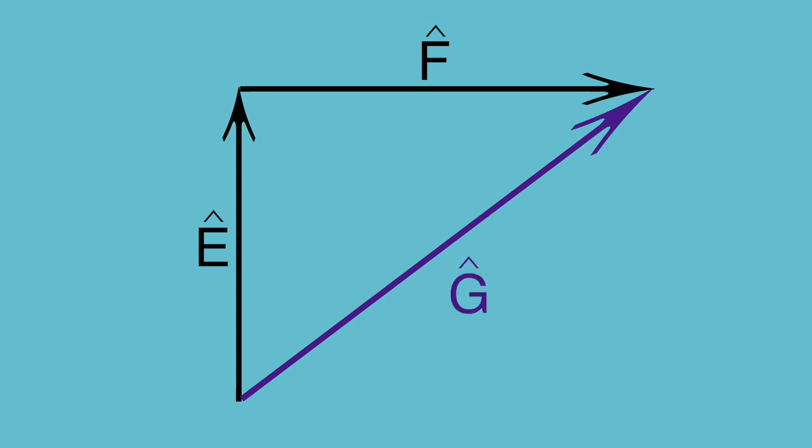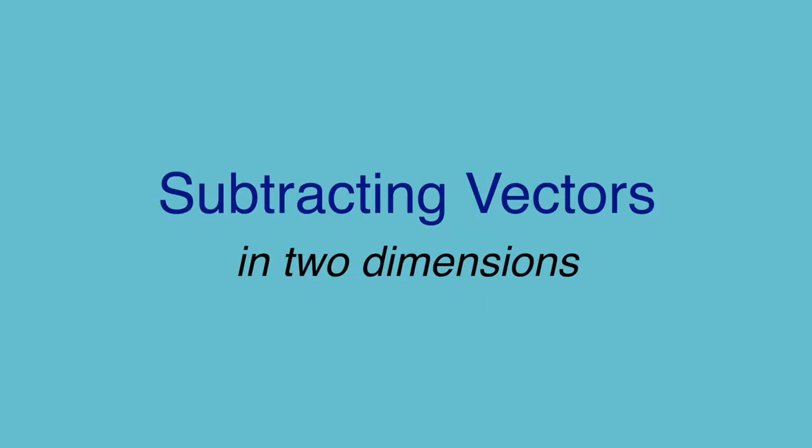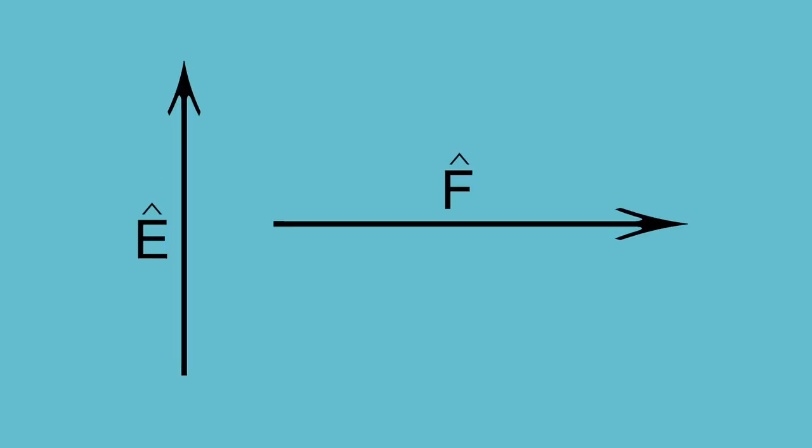It's the sum of e dash and f dash, with a magnitude that is greater than either of them, and a direction that is in between theirs. Suppose we return to these two vectors, and somebody asks us to subtract f dash from e dash. What then?